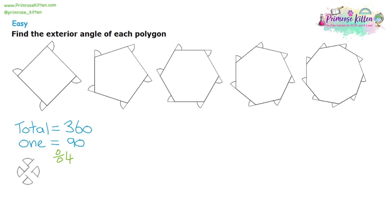I'm going to do the same thing for question two. I'm going to cut out all five angles: the angle at the bottom, the bottom left, the bottom right, the top left, and the angle at the top right. Again, if you look at the way I'm arranging these angles, you should be able to see that they are going to make a full circle. So the total exterior angles of that shape is also 360 degrees.